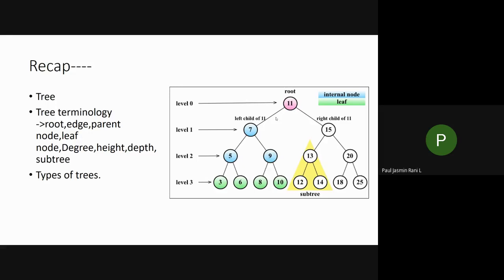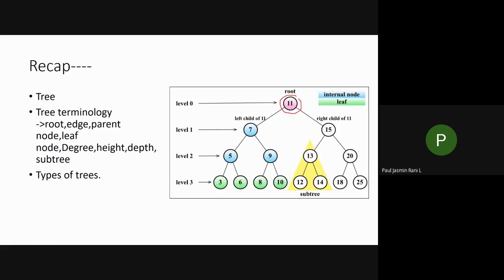Let's see the terminology used in your tree data structure once again. You will have only one root element in your tree data structure - we call it as the root, or the grandparent. This is very important. If you don't have a root element in your tree, then it is empty. The first element created will be marked as the root element.